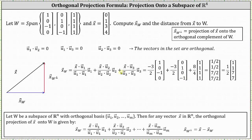Finally, we have vector x dot vector u3, which is 0·1 + 1·1 + 3·1 + 4·1, which is 8. Divided by vector u3 dot vector u3, which is 1² + 1² + 1² + 1², which is 4.